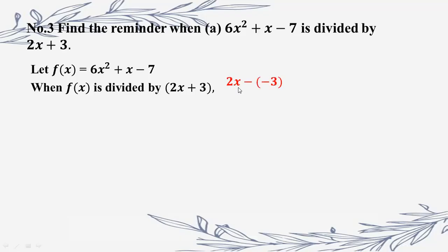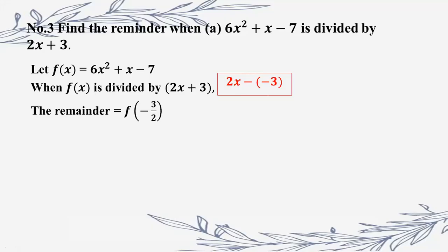We have minus b; b is going to be minus 3 and a is minus 2. So I will write the formula for b by a. So b is minus 3 and a is minus 2; therefore b by a is minus 3 by 2.